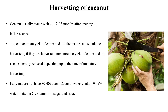The harvesting of coconut is usually done about 12-13 months after the opening of the inflorescence. The fully mature coconut has got 30-40% coir, and the coconut water in the fully mature nut contains about 94.5% water, with the rest comprising vitamin C, vitamin B, sugar and fiber.